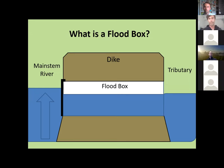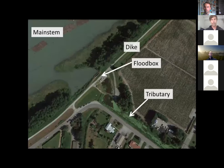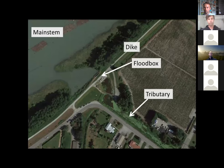You already saw the animation, and I think it really shows the problem well. From a top view this is a slough in the Fraser Valley — you've got the main stem river on one side, you have a dike, you have a flood box, and then you have a tributary stream flowing through some farmers' fields on the other side.